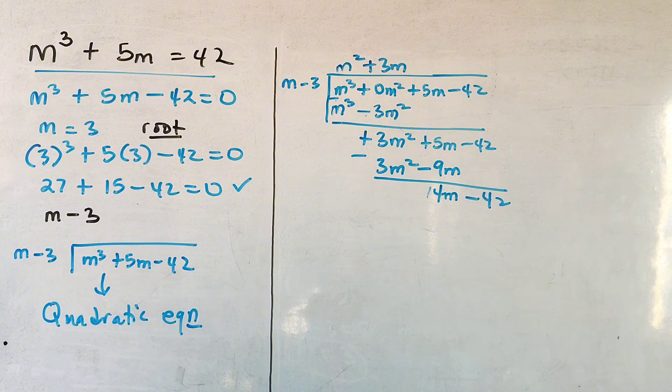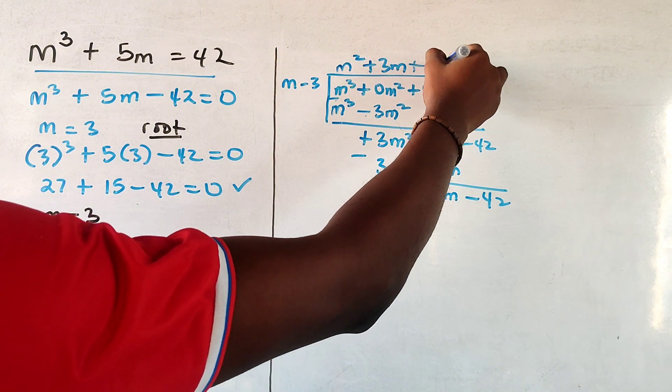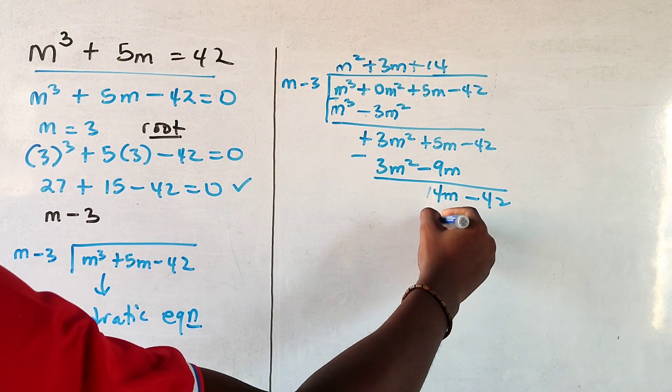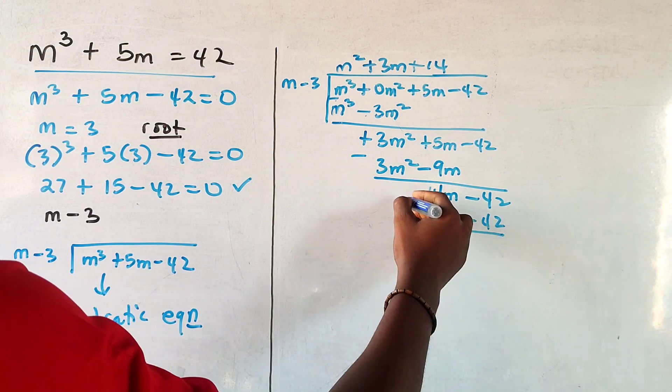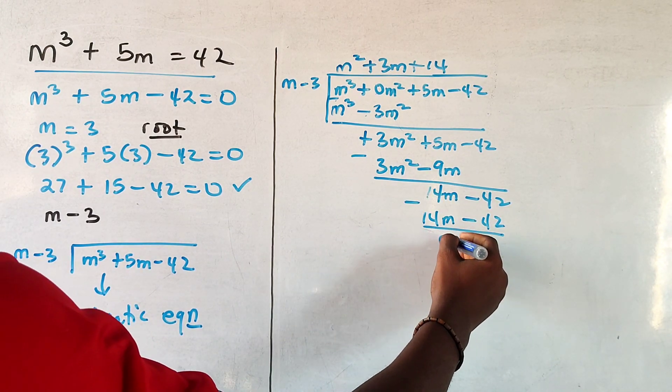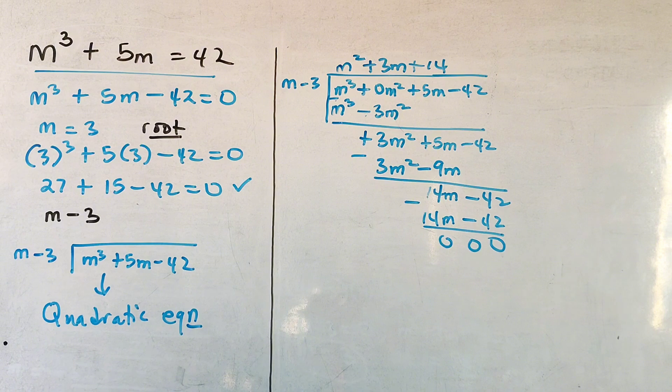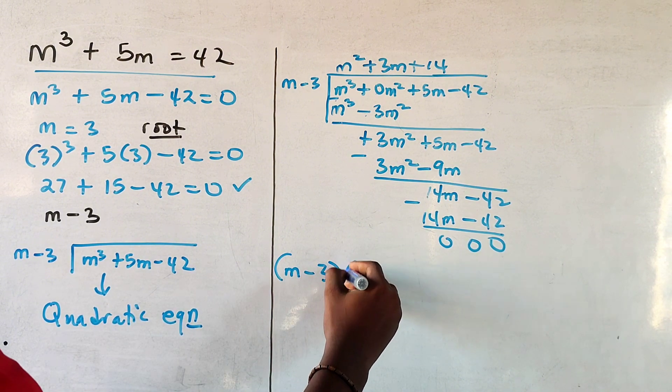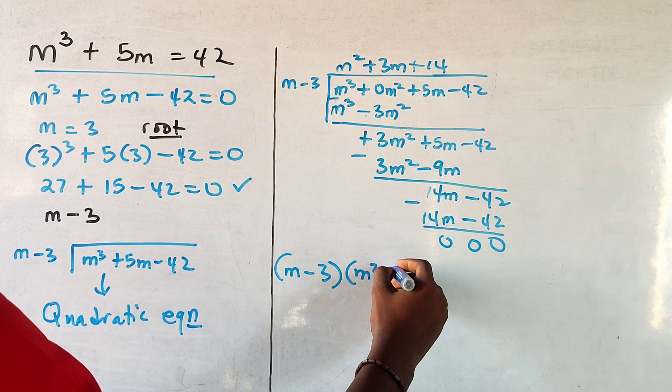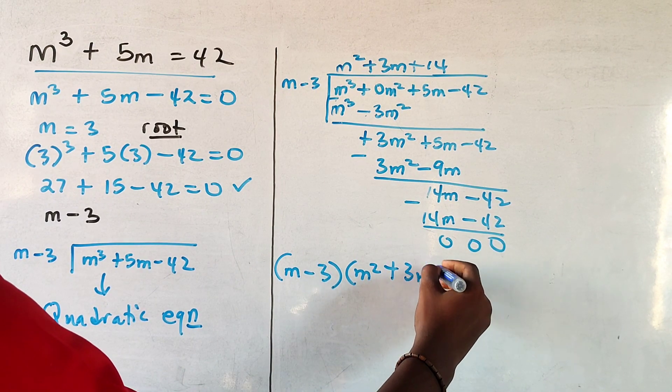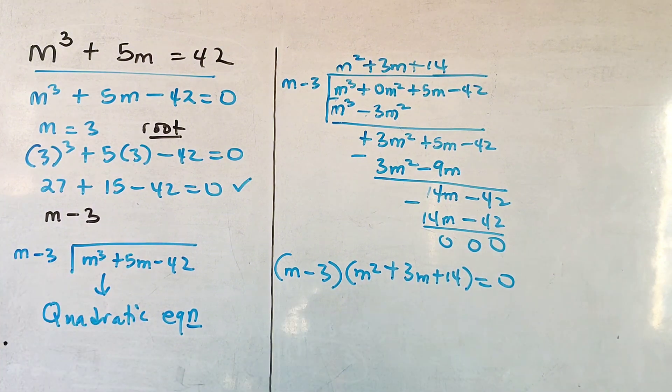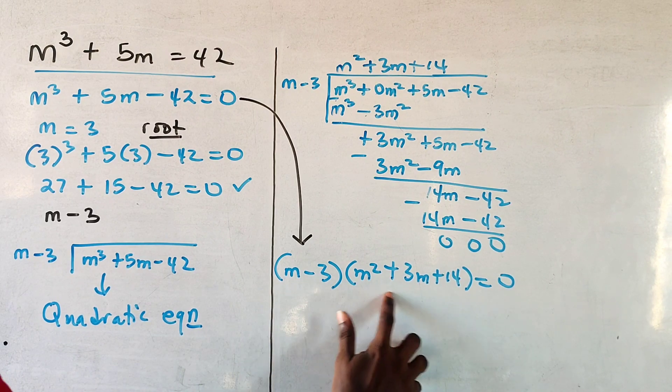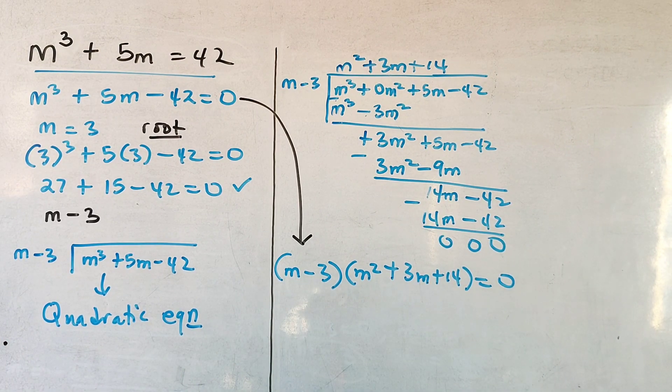Then minus 42 comes down. Then you multiply by 14 here, which will give you 14m minus 42. When you subtract for the final time, you will realize you have no remainders. Now this means that m minus 3 times m squared plus 3m plus 14 equals 0. What we have done here is to reduce this into its factors, one is linear expression and the other one is quadratic.